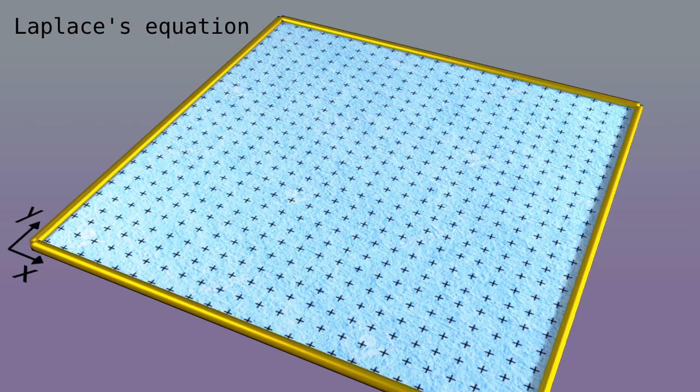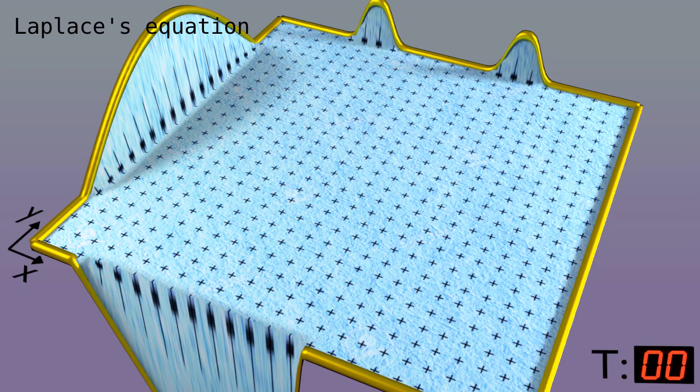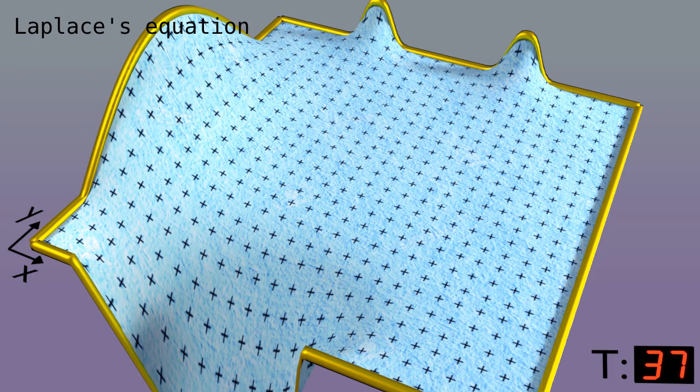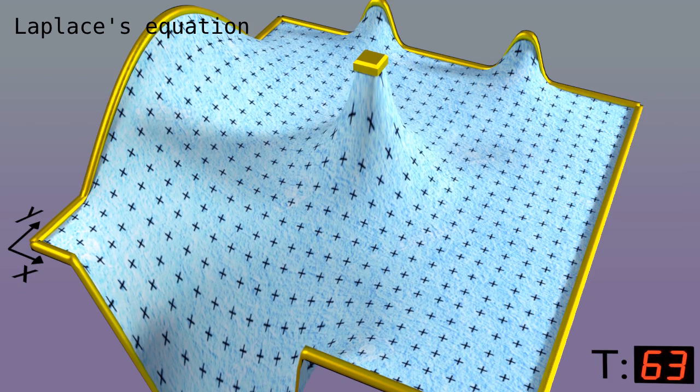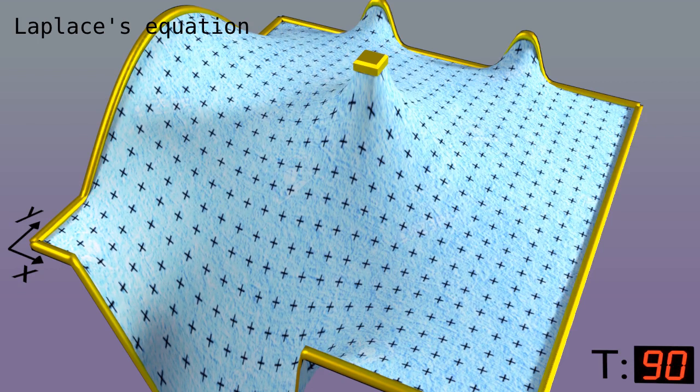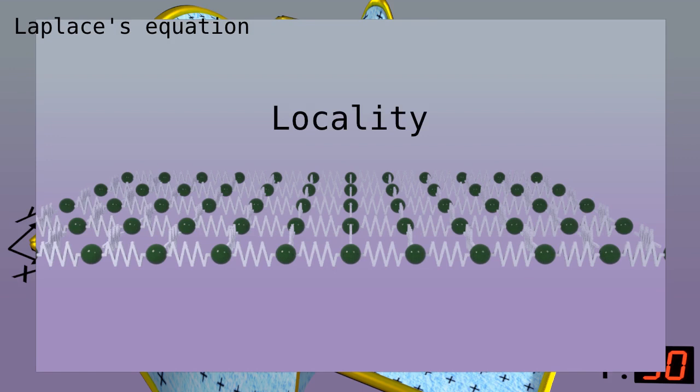The boundary conditions don't have to be zero. And we can again have an internal condition. We see that when we change the condition, that change spreads out from that location. It is not an instantaneous effect. This is called locality. The root of this locality is in the springs. Each particle is only connected to its immediate neighbors. So when we change the location of a particle, the effect first spreads to its neighbors, then to their neighbors, and so on. Now, because this grid has two dimensions, I'll use the word two-locality. More on that later.